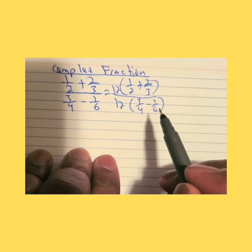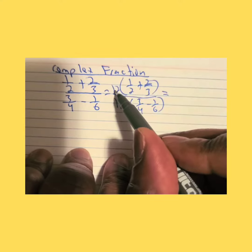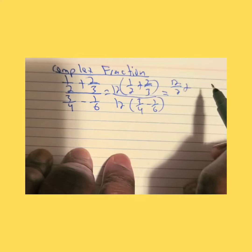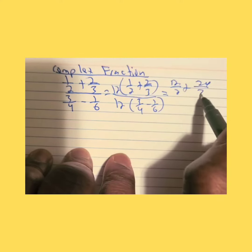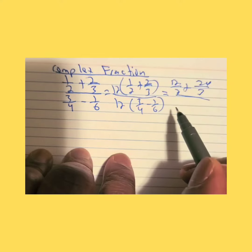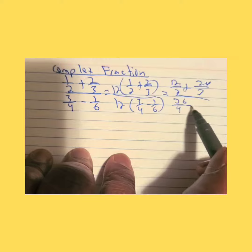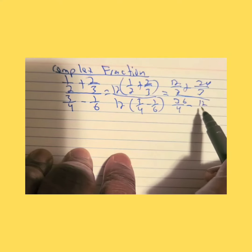12 times 1 is 12, so 12 over 2, plus 12 times 2 is 24 over 3, 12 times 3 is 36 over 4, minus 12 times 1 is 12 over 6.